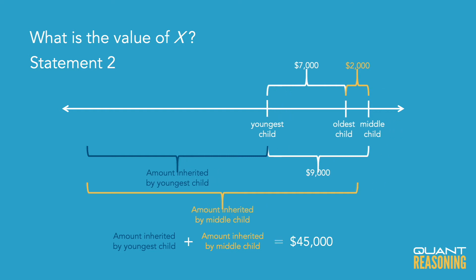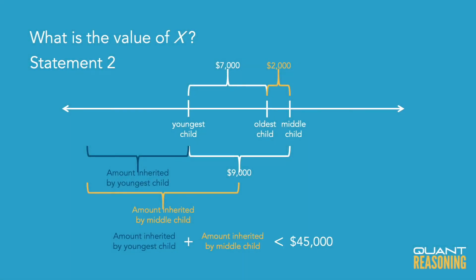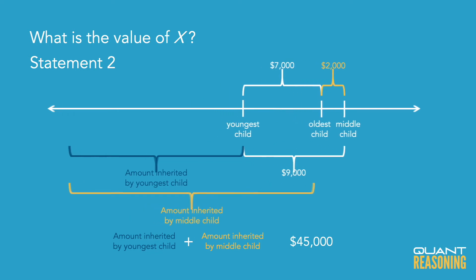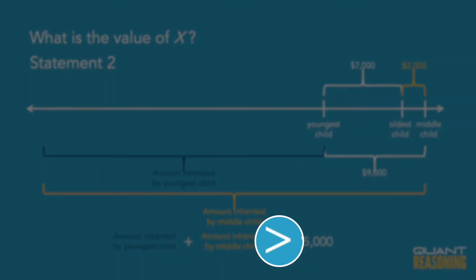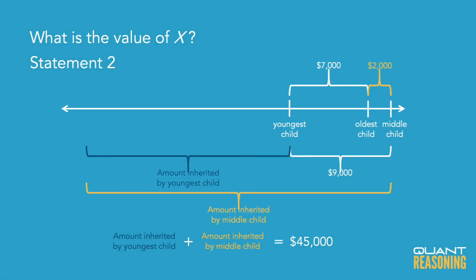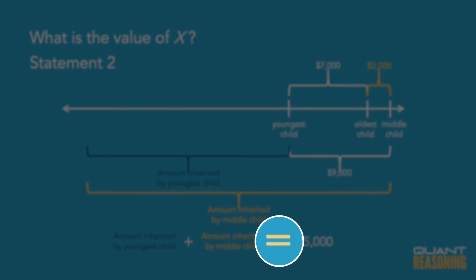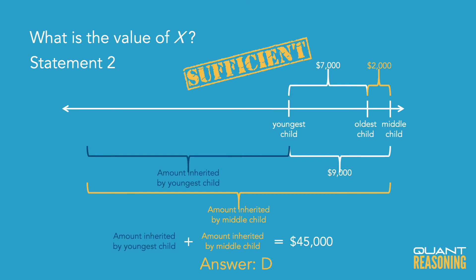The minute we start moving these tick marks closer to zero, that total amount that the youngest and middle child inherited together would get lower. And if you start moving the tick marks to the right, that number would get bigger. So by giving us the exact dollar value that the youngest and middle child inherited combined, it pinpoints one particular layout on the number line. Therefore this statement is sufficient on its own as well, and the correct answer is D.